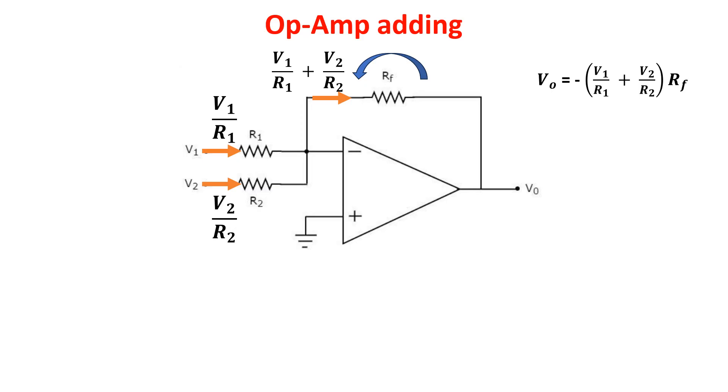In the case R1 is equal to R2, we see the output voltage is proportional to the sum of V1 and V2. So, now we have all the components needed for our little analog multiplier circuit.